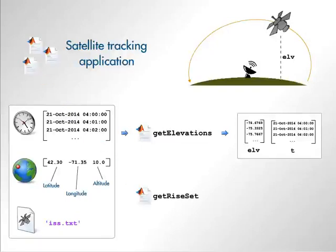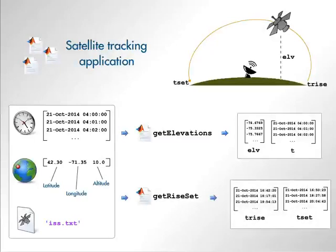Another important function in the application is Get Rise Set. This function takes the same inputs as Get Elevations, but returns the horizon crossings of the satellite with respect to the observer. Think of it like a sunrise or sunset, but for a satellite.